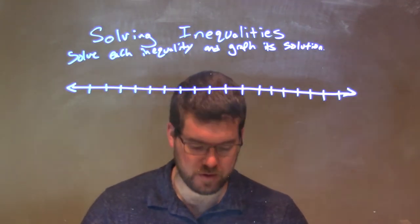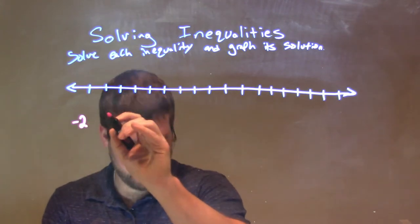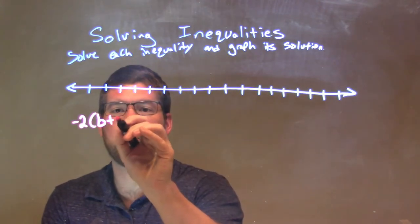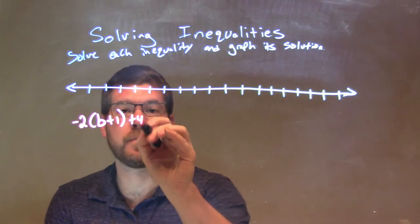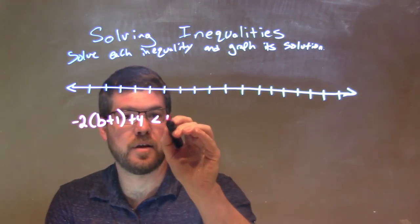If I was given this inequality: negative 2 times (b plus 1), in parentheses, plus 4, is less than 10.